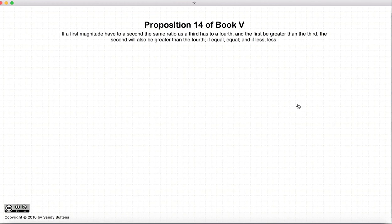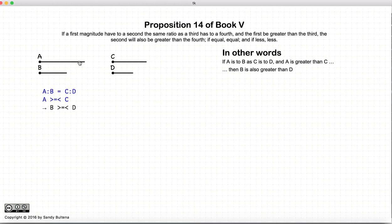This video presentation is going to be on Proposition 14 of Book 5. Now, in this proposition, we start with two ratios, a to b and c to d,